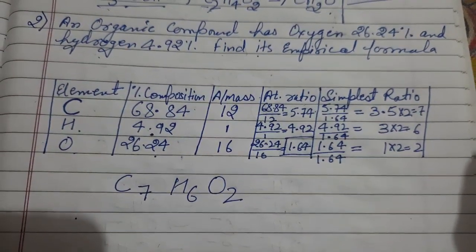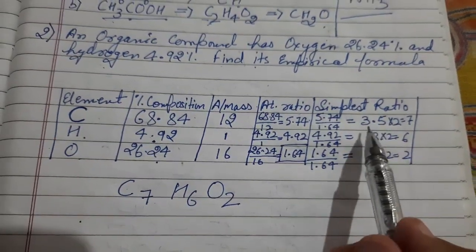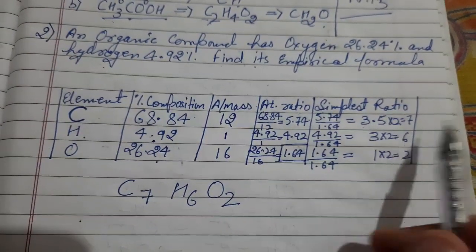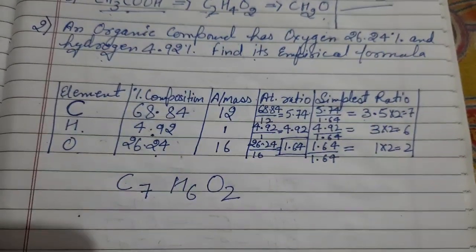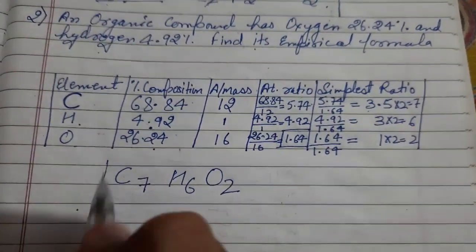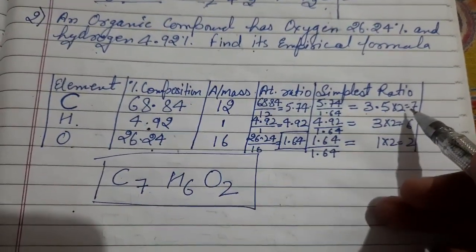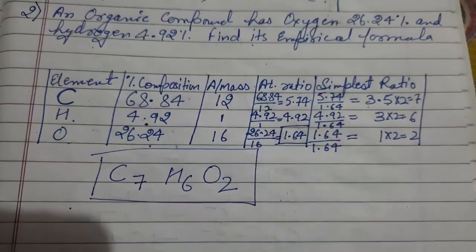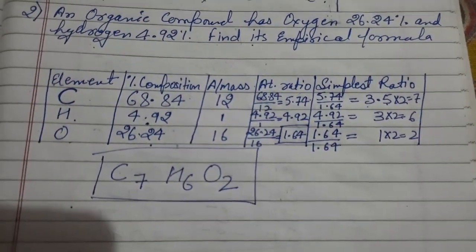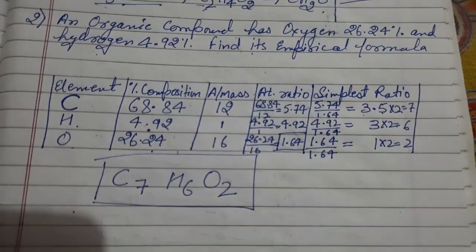Remember this thing: if instead of 3.5, 4 or 5 came, then direct values would be placed in front of these symbols of elements and you will be getting a particular empirical formula. But in this case it comes in point, so we have to multiply it with shortest possible number. That's why it comes out to be C7 H6 O2. Thank you.